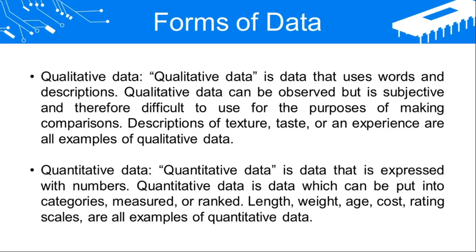Quantitative data is data that is expressed with numbers, such as age, size, weight, length, cost, and rating. This is data which can be put into categories, measured, or ranked. All of these — measurement, rank, length, weight, age, cost, rating — are examples of quantitative data. Quantifiable data is quantitative data.